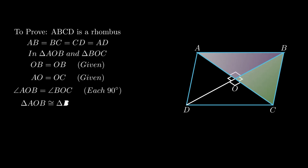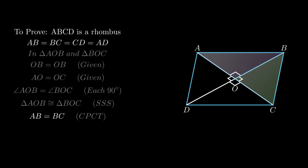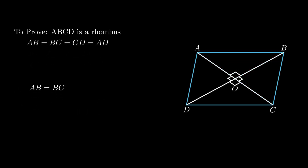Therefore, by the side-angle-side rule, triangle AOB is congruent to triangle BOC. By corresponding parts of congruent triangles, we conclude segment AB equals segment BC.